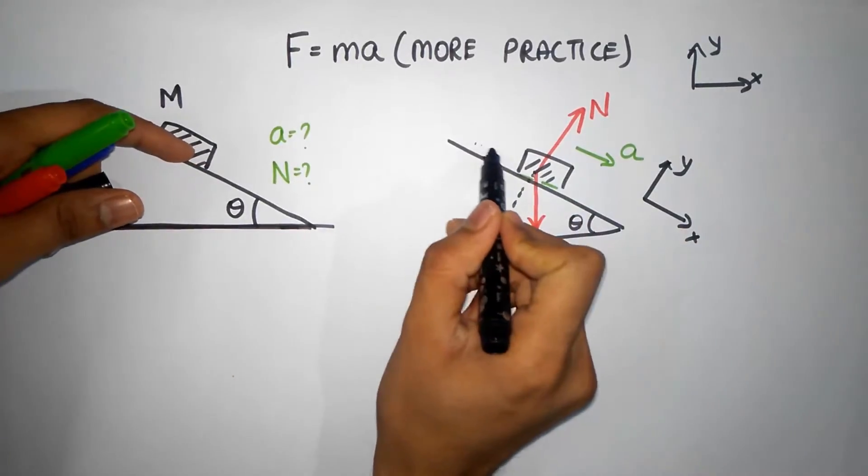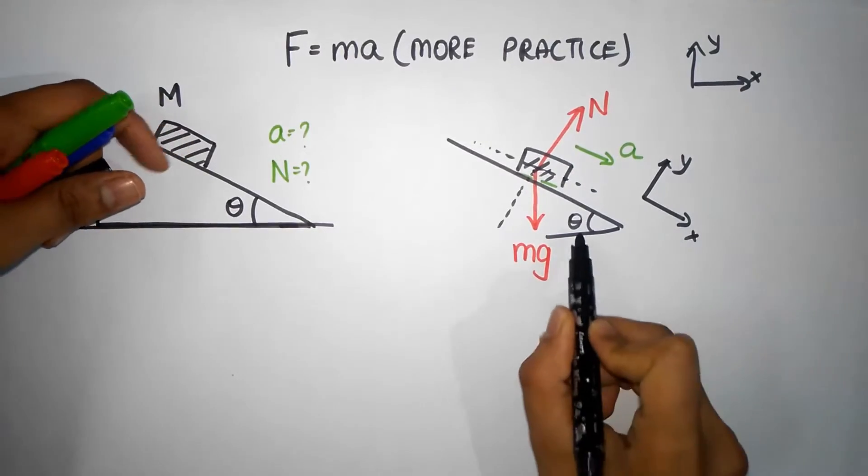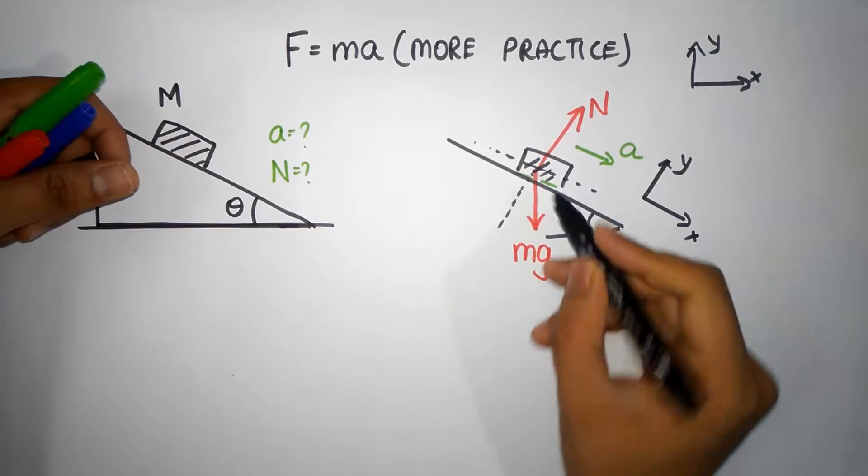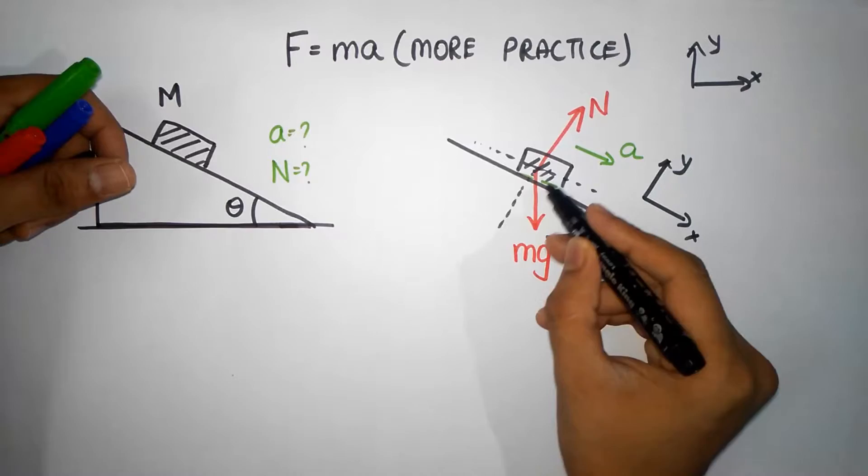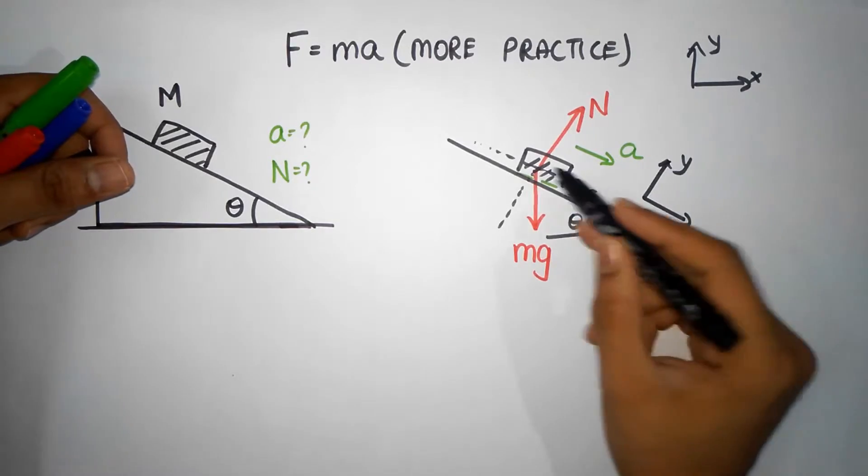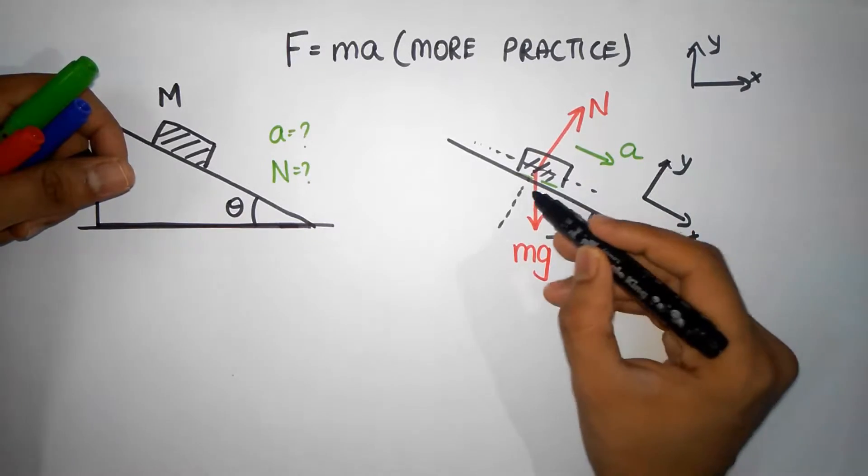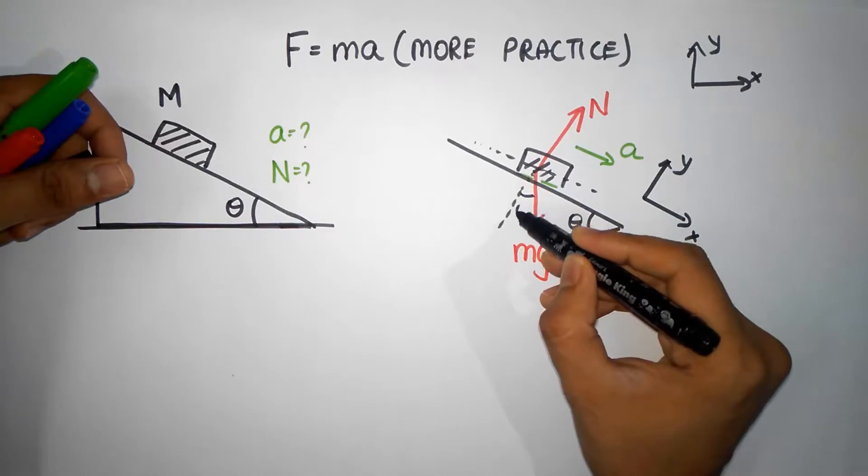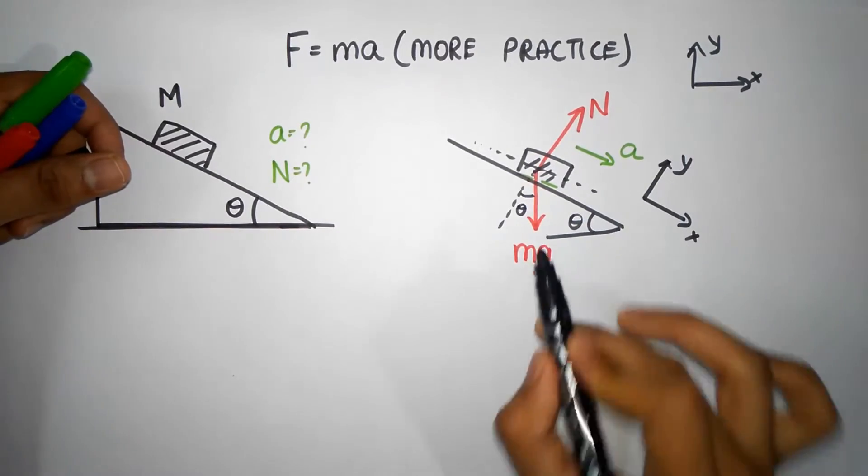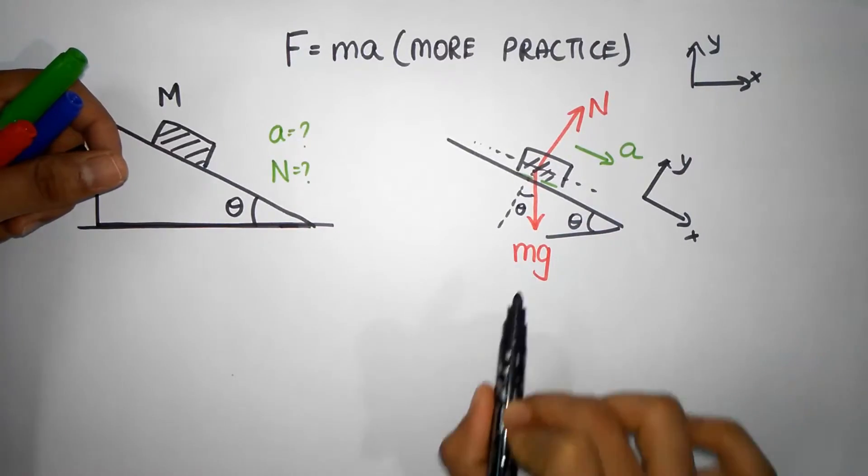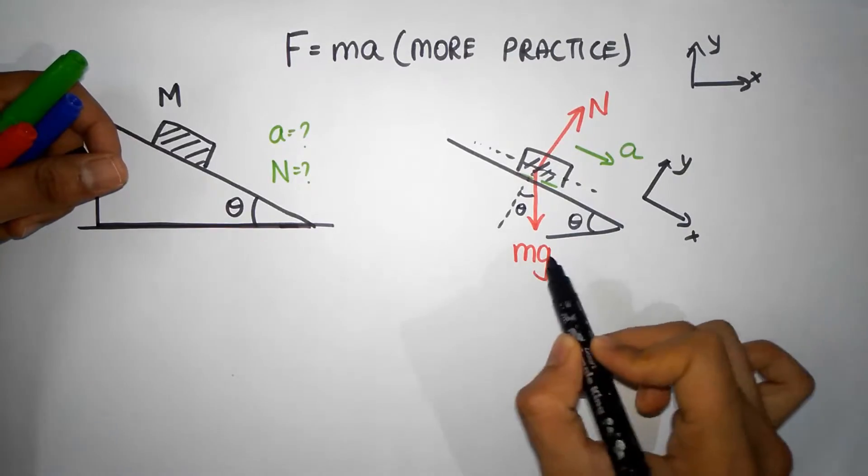So let's quickly do that. Let's put our axis over here, reference marks. Notice that this angle is theta. This angle does have to be 90 minus theta. Think of this as the right angle triangle: theta, 90, 90 minus theta, which means this angle has to be theta. If you did not get it, pause for a while, draw this, do the geometry. You will get it. You should be able to do this.